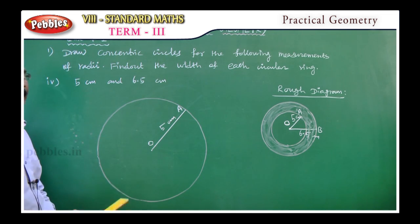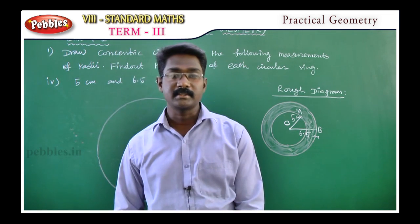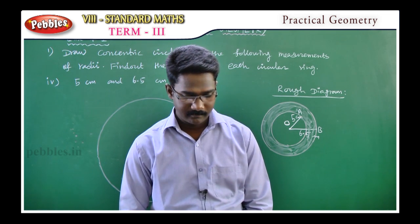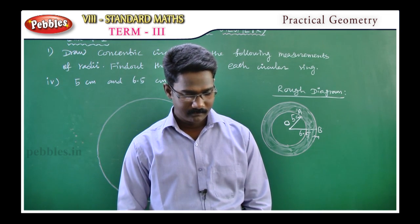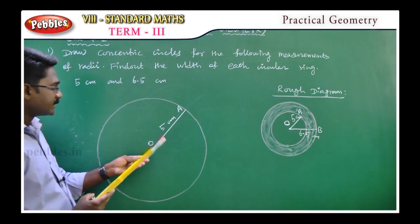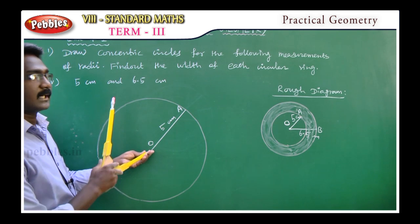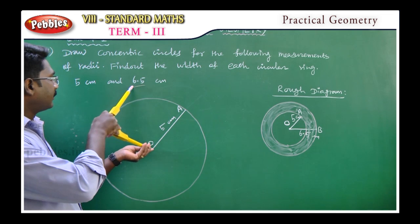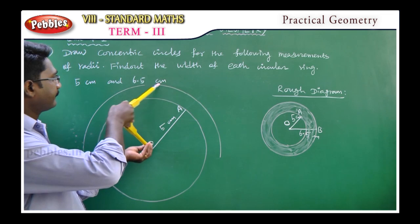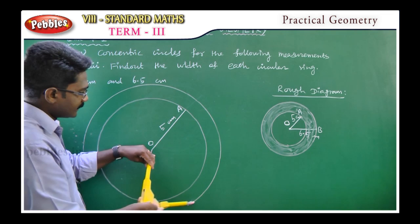The second radius is 6.5 centimeters. Set the compass to 6.5 centimeters. Measure 6.5 centimeters from the center point and draw the second circle.